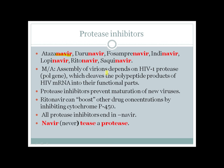The mechanism is that virion assembly depends on HIV-1 protease, which cleaves polypeptide products. HIV-1 protease is inhibited by protease inhibitors, which thereby prevent the maturation of new viruses. One important drug is ritonavir, which has added efficacy by boosting other drug concentrations through inhibition of cytochrome P450. A useful mnemonic: all protease inhibitors end in '-navir' — 'navir' for 'never tease a protease.'